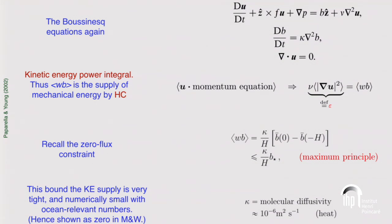This is actually what got me interested in the whole problem — the first sentence of Wunsch and Munk states: because of Sandstrom's theorem, convection provides no mechanical energy to the ocean.